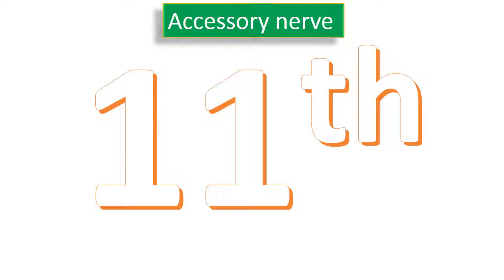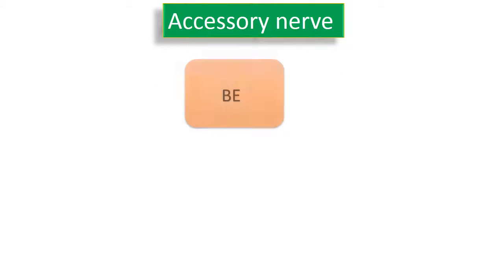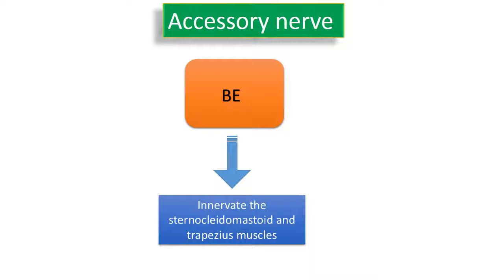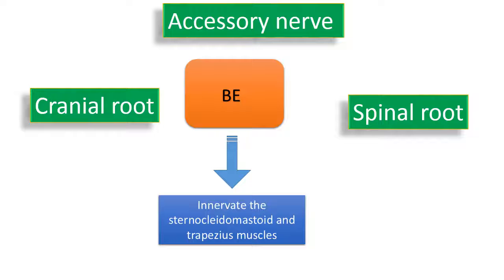The eleventh cranial nerve, or the accessory nerve, is often considered a transitional nerve between cranial nerves and spinal nerves. It has a branchial efferent component that supplies the sternocleidomastoid and trapezius muscles. The accessory nerve has two roots: the cranial root and the spinal root.